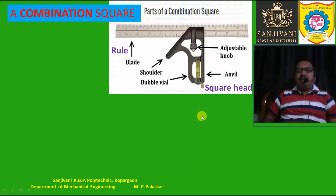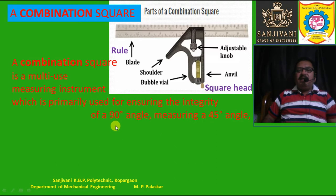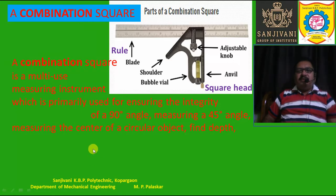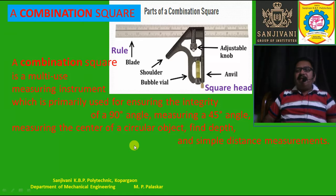A combination square is a multi-use measuring instrument which is primarily used for ensuring the integrity of a 90-degree angle, as well as measuring and ensuring the correctness of a 45-degree angle. It can also be used for finding the center of a circular object, finding the depth of some object, and for simple distance measurements.